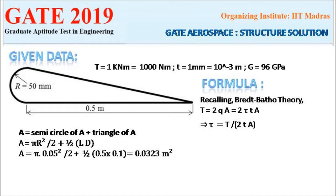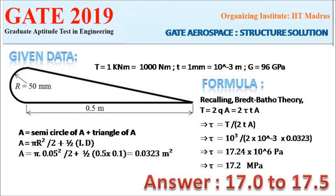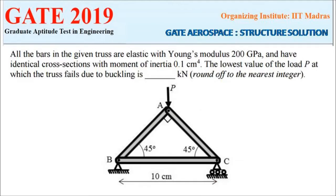Using the known radius, length, and depth, we calculate the area of the semicircle and the triangle separately, then combine them. The total enclosed area works out to 0.0323 m². Substituting into τ = T / (2·t·A), we get 17.24 × 10⁶ Pa, which is 17.2 MPa. The answer range is 17.0 to 17.5 MPa, which is within the acceptable range.